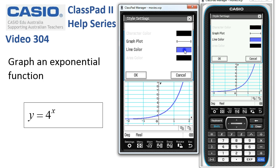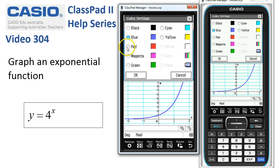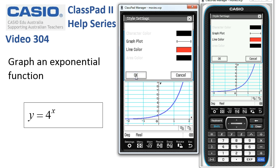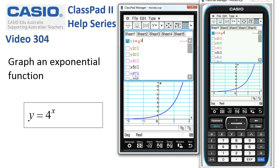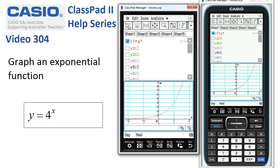We could also change the line color if we so chose to, maybe a red instead, and we'll tap ok. And now when we say ok a second time and tap on the draw the graph icon, we've got a thin red line this time.